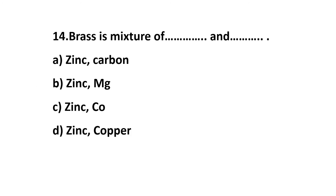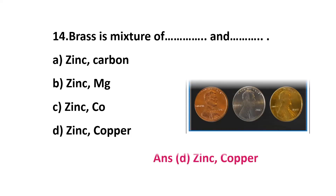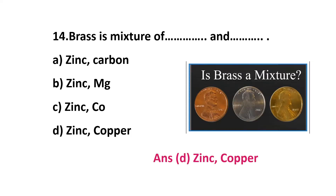Question 14: brass is a mixture of __ and __ — option A: zinc and carbon, option B: zinc and magnesium, option C: zinc and cobalt, option D: zinc and copper. The correct answer is option D: brass is a combination of zinc and copper.